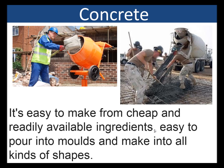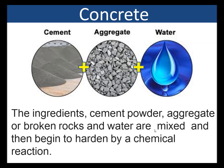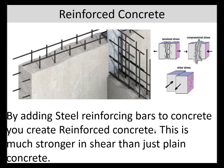Concrete is easy to make from cheap and readily available ingredients. It will pour into moulds and make into all kinds of shapes — it is a very widely used composite material. The ingredients are cement powder, aggregate (which are basically broken rocks), and water, mixed together and hardened by chemical reaction. By adding steel reinforcing bars to concrete you create reinforced concrete, which is much stronger in shear than plain concrete. This is a very strong composite material, widely used in building.